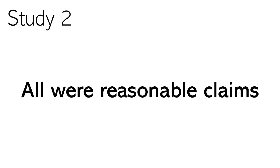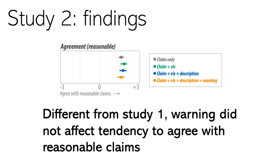After Study 1, we also conducted Study 2. Study 2 was the same as Study 1; however, instead of seeing causal claims with different levels of plausibility, participants in Study 2 only saw reasonable causal claims. In Study 1, we found that the warning message made people more cautious in accepting some causal claims. But in Study 2, we were not able to see any effects — the warning message did not make participants more cautious in accepting the claims.